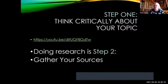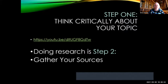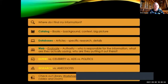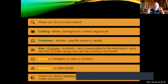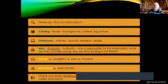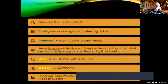Doing research is step two, and that's what we're going to focus on now — gathering your sources. Where do you find your information? You start off by looking for the big picture, the background, the context — why your topic is important, why anyone would care, why it would catch your audience's attention. And you do that in the catalog, which is a database of all of our books that we own.